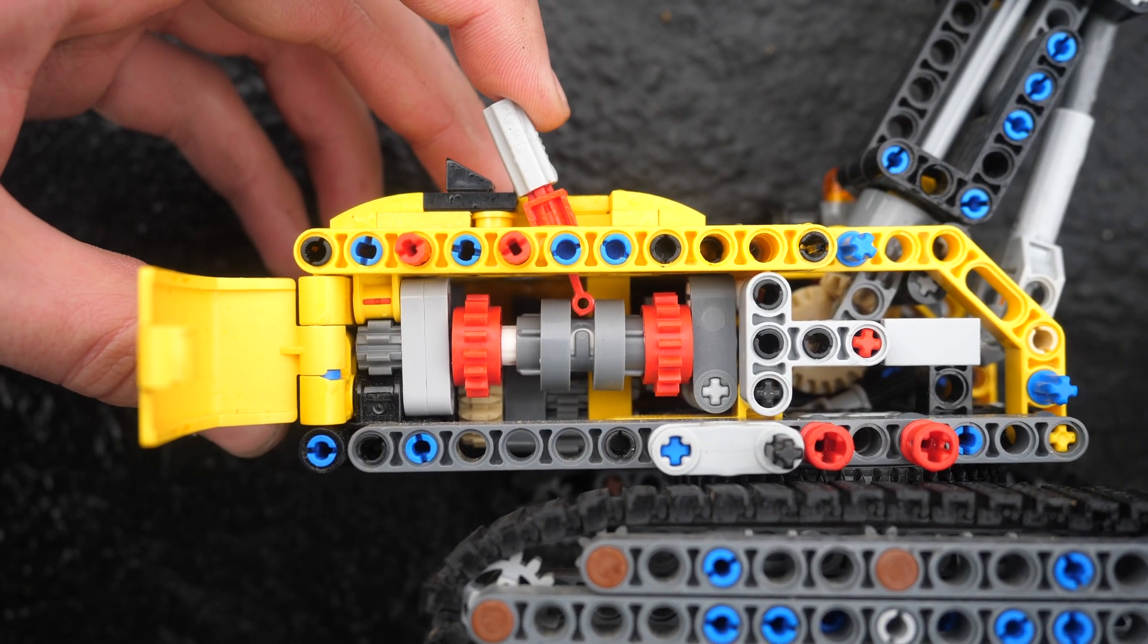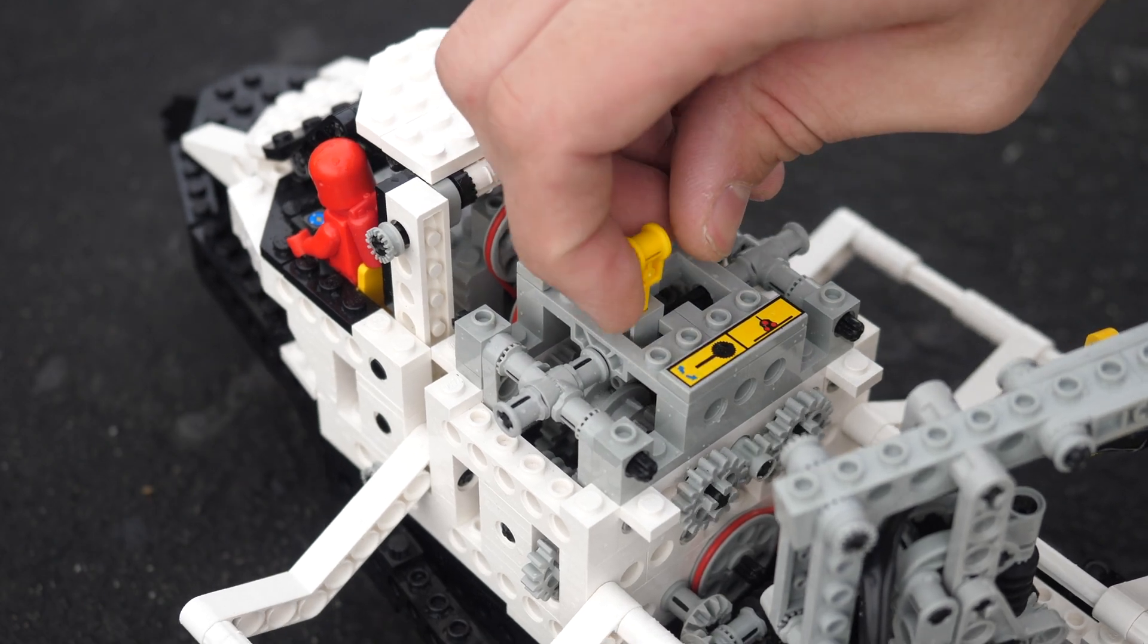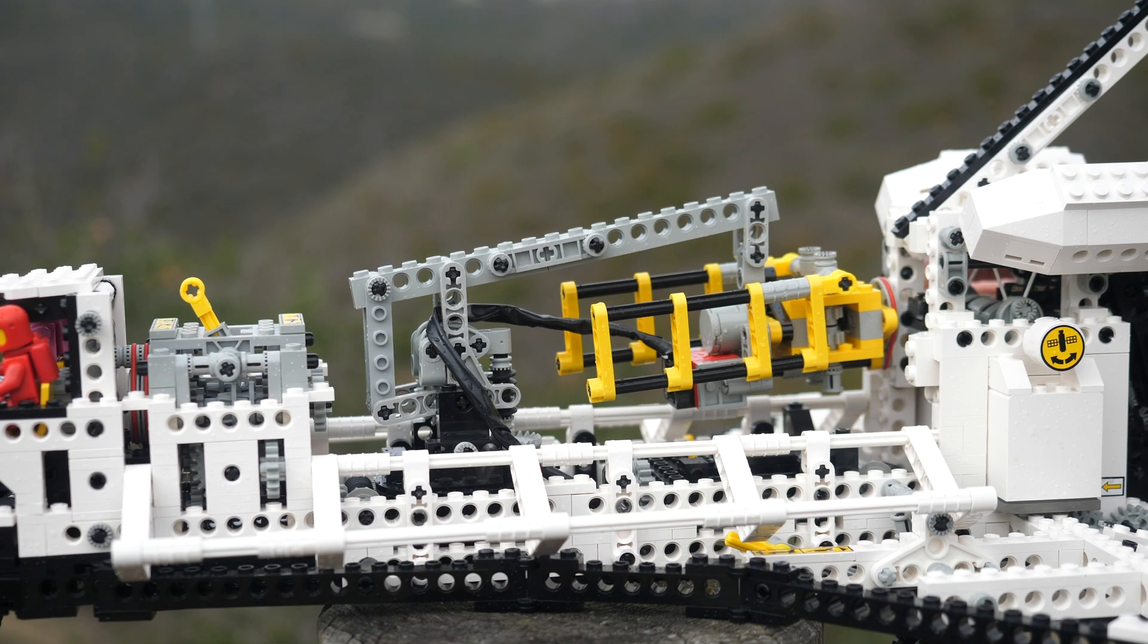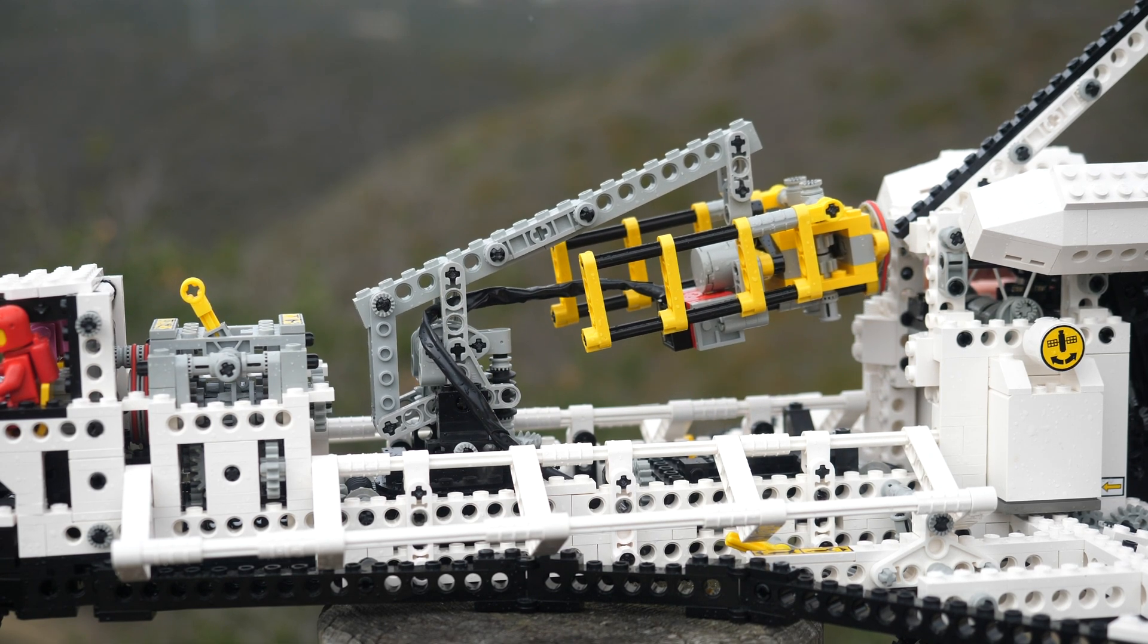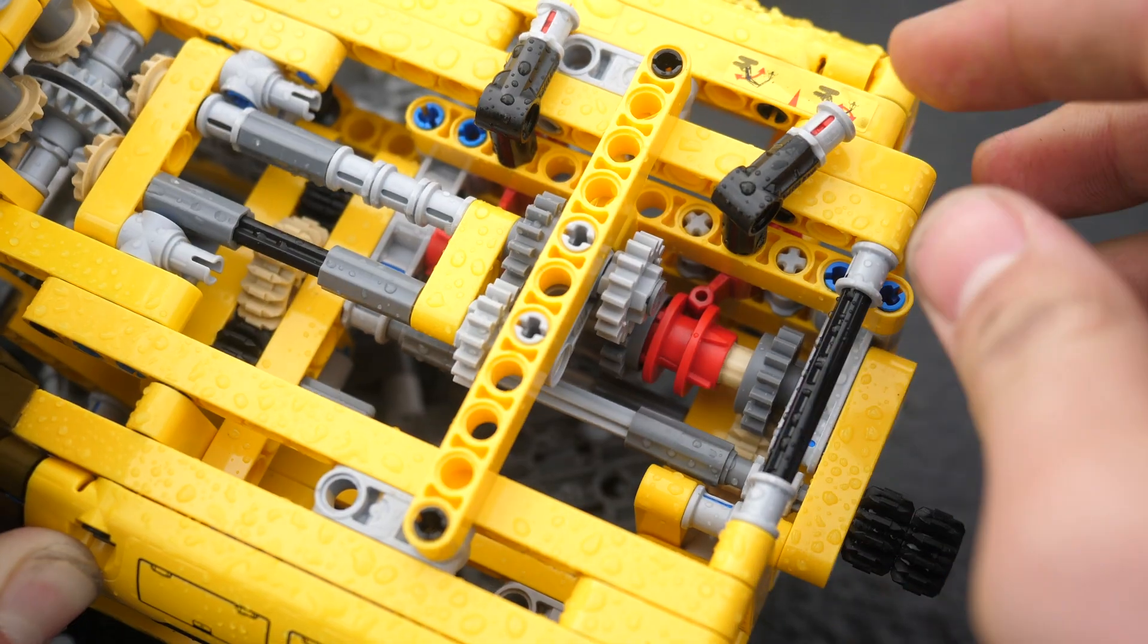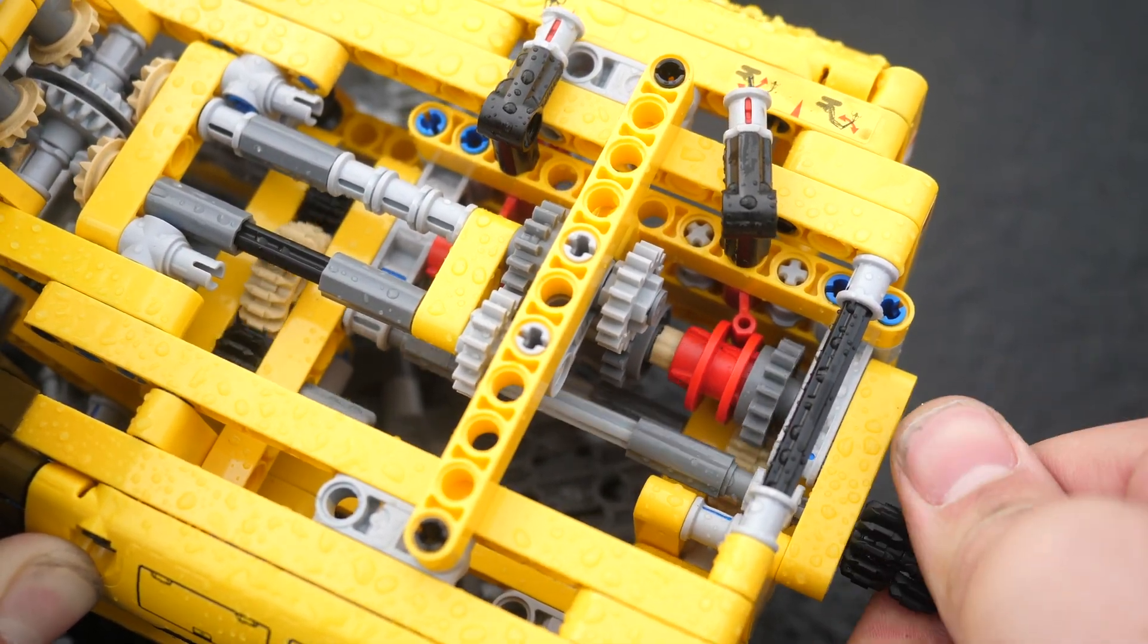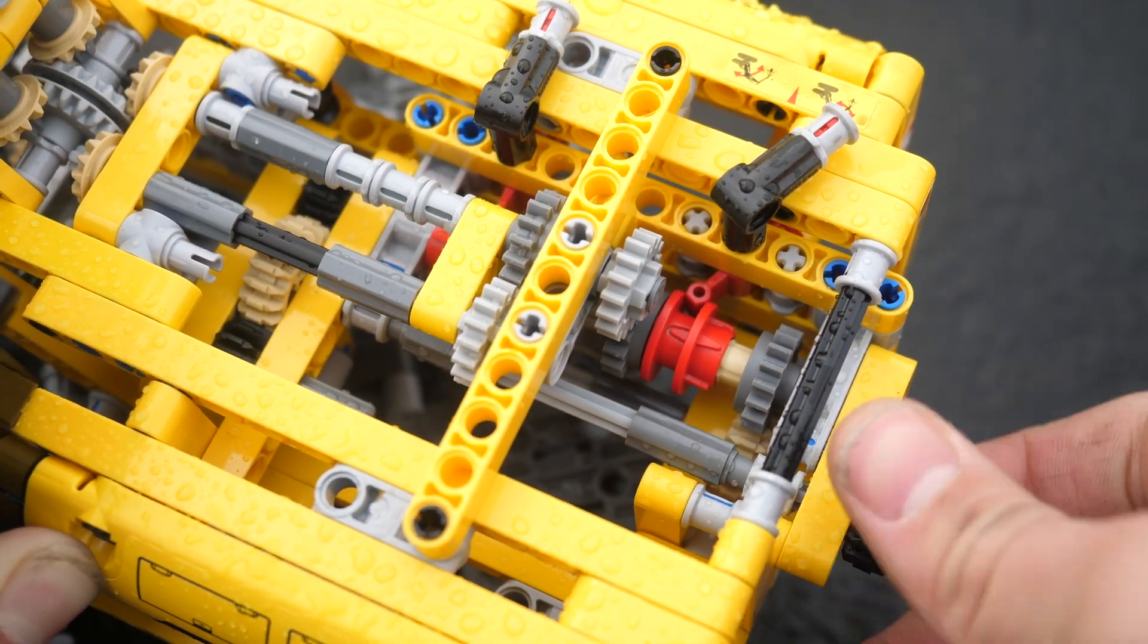The distribution gearbox was first introduced in the LEGO Technic Space Shuttle of 1996. There is one motor that can control 4 different functions independently, but not simultaneously. Essentially, the driving ring is always connected to the input, and you can lock the driving ring with either the front function or the rear function.